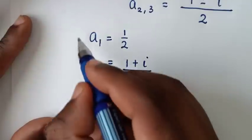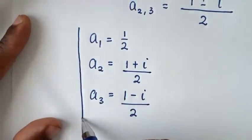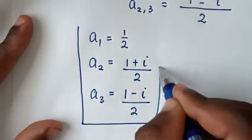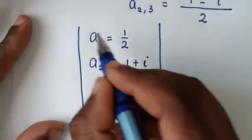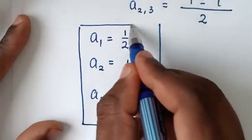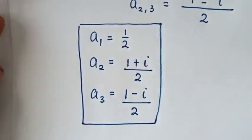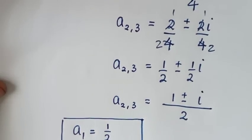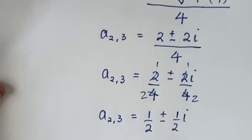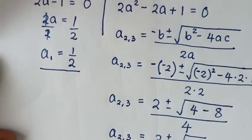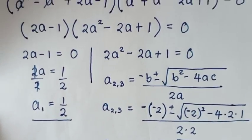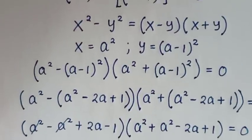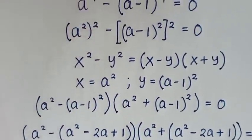So these are all the values of a in this problem: a₁ equals 1/2, a₂ equals (1 plus i)/2, and a₃ equals (1 minus i)/2. Thank you for watching — don't forget to subscribe to my channel, and see you in the next video. Bye bye.